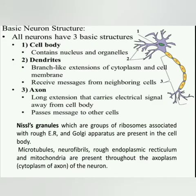Neurons have three basic structures: the cell body, which is the main portion containing the nucleus and organelles; dendrites, which are extensions that receive messages from neighboring cells; and the axon, which is a long extension that carries electrical signals to other cells. The cell body also contains Golgi apparatus, microtubules, neurofibrils, rough endoplasmic reticulum, and mitochondria inside the cytoplasm of the axon.